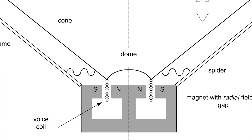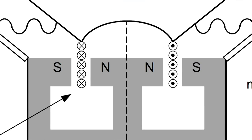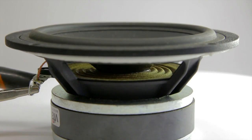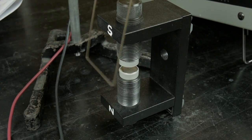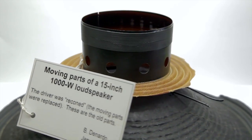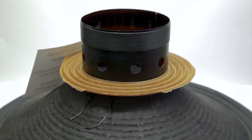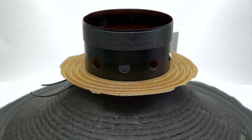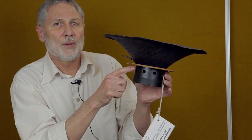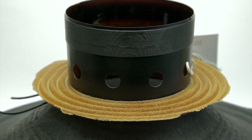A current through the voice coil in a magnetic field causes a force on the coil and thus the cone. The action here is essentially the same as the jumping wire demonstration. Here is a damaged voice coil and cone that was removed when a 15-inch diameter, 1,000-watt loudspeaker was being re-coned. The voice coil is wrapped around a lightweight cylinder for rigidity and for attachment to the cone.